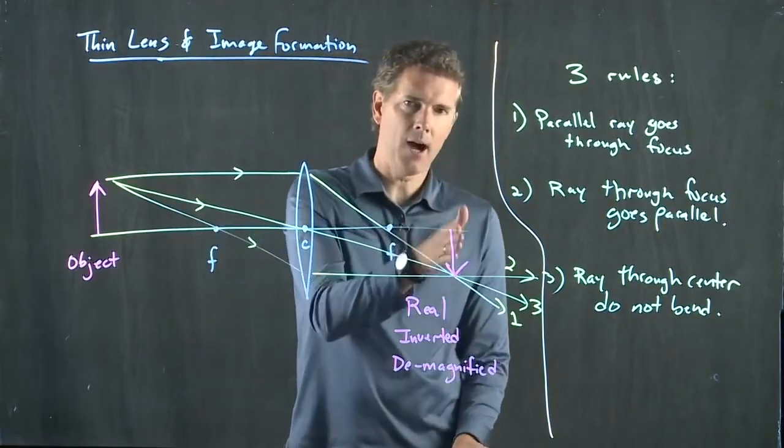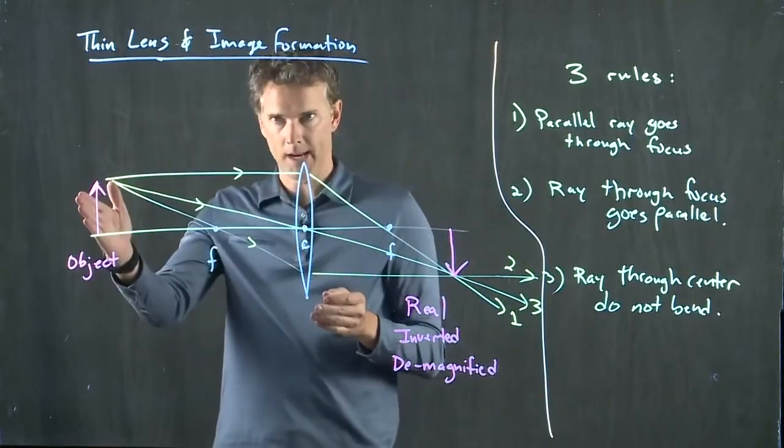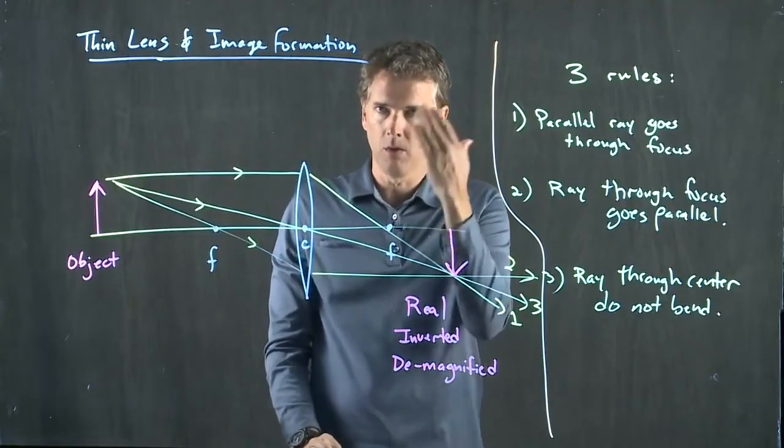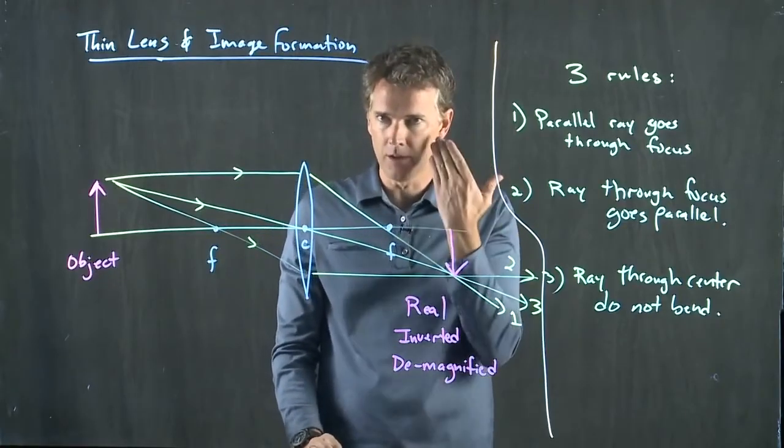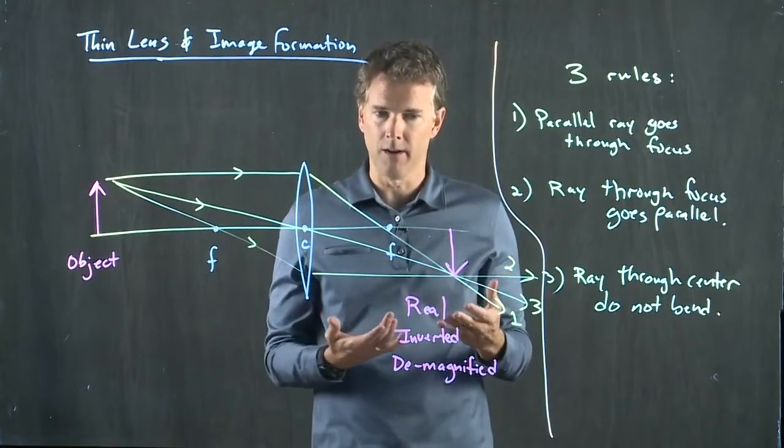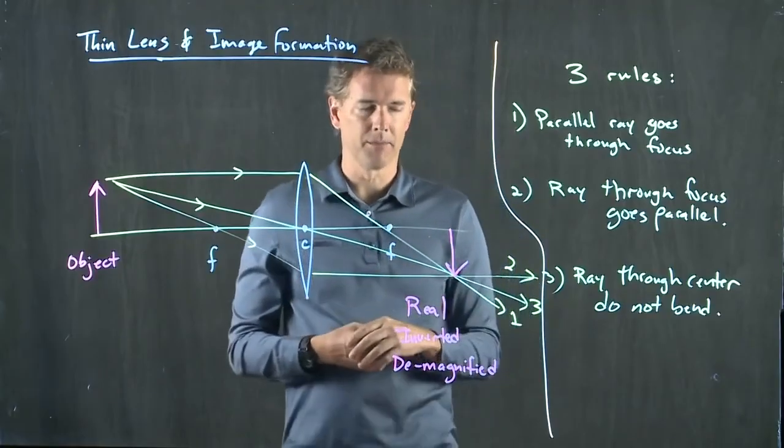But guess what, this is exactly how you view the real world. Your eye is a lens. When you look at a tree, the image on your retina is upside down. The whole world that you're seeing around you is upside down. Your brain has figured out how to not really worry about that and correct for it. But on the retina, the back of your eyeball, everything is upside down.